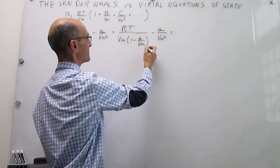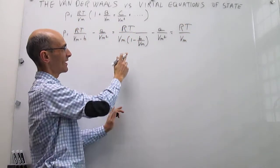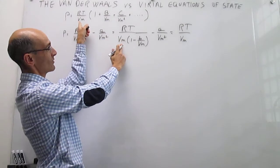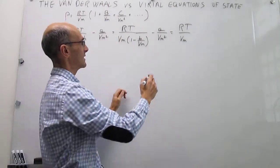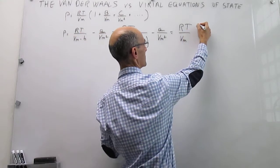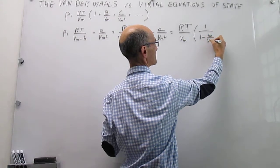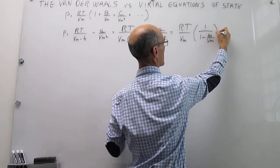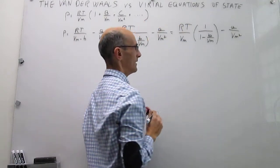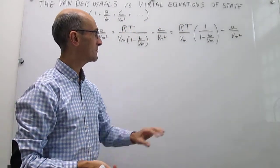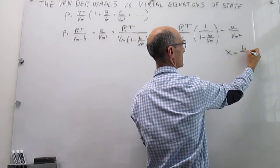Rearranging this a little bit: RT over V_M, and the whole term can be written as 1 over (1 minus b over V_M), minus a over V_M squared. Now I introduce a new variable x, defined as b over V_M — the Van der Waals parameter b divided by the molar volume — so the expression becomes RT over V_M times 1 over (1 minus x), minus a over V_M squared.